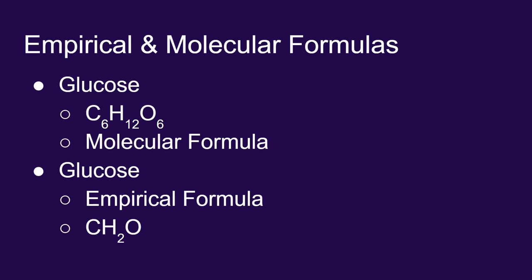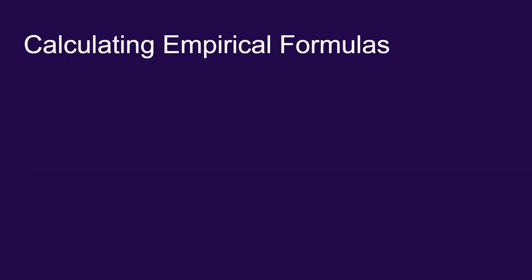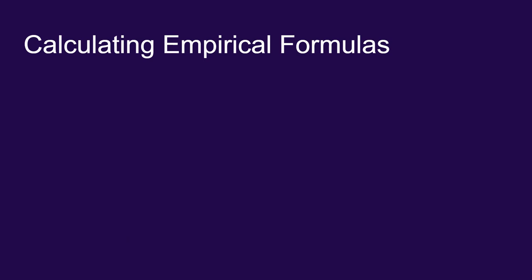So the empirical formula simply gives you the simplest ratio of the elements in your molecule. It does not tell you exactly how many of each element are present. Let me show you how one could calculate an empirical formula.